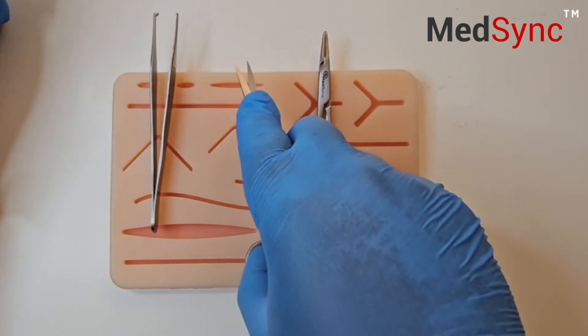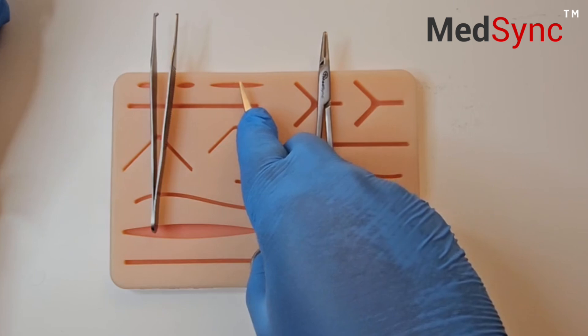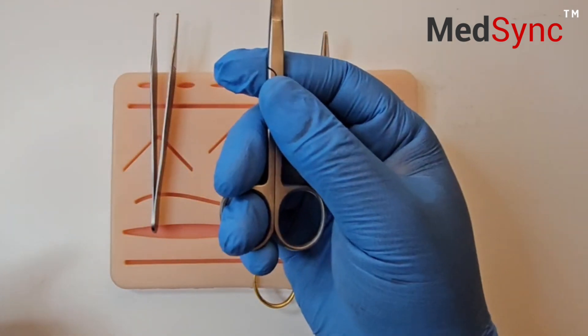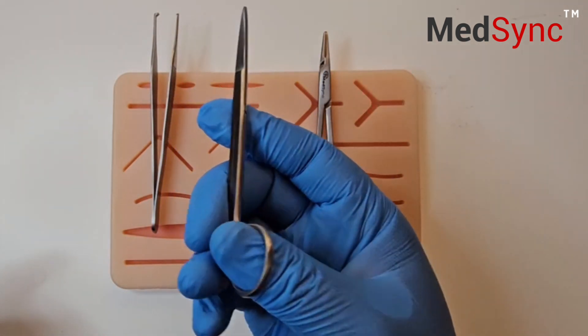Open the scissor, slide down the suture and cut with the tips. These are typically right-handed instruments so this is how you would hold it.